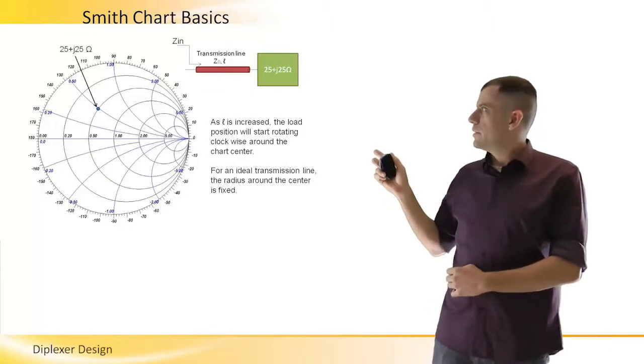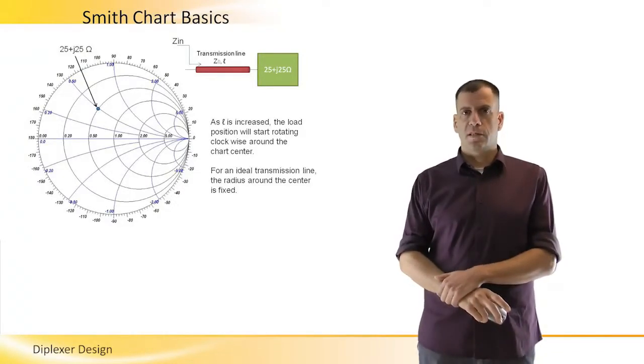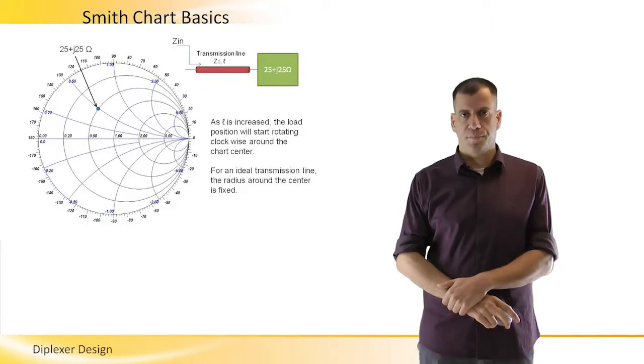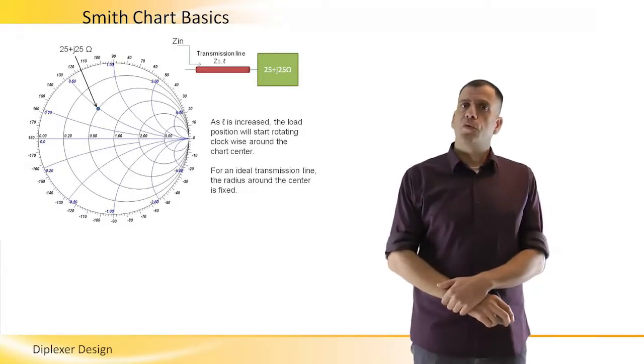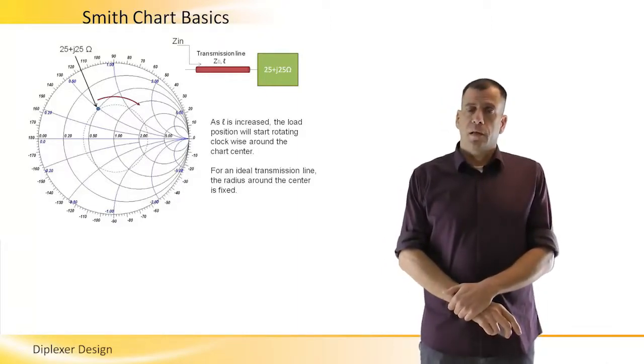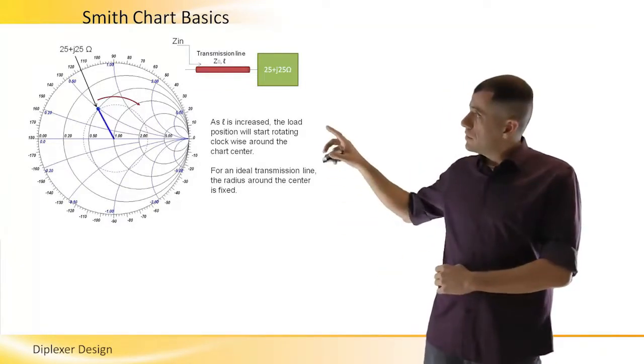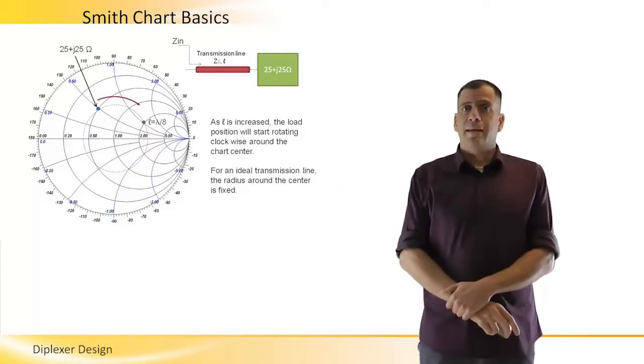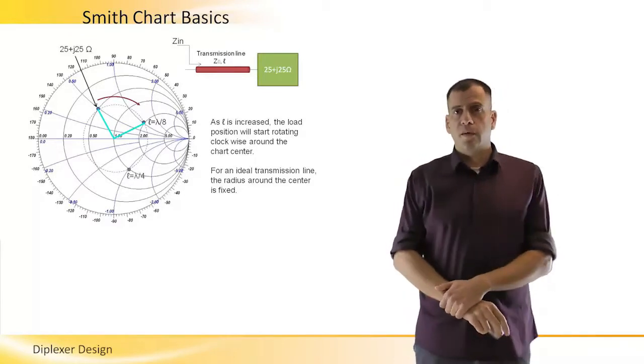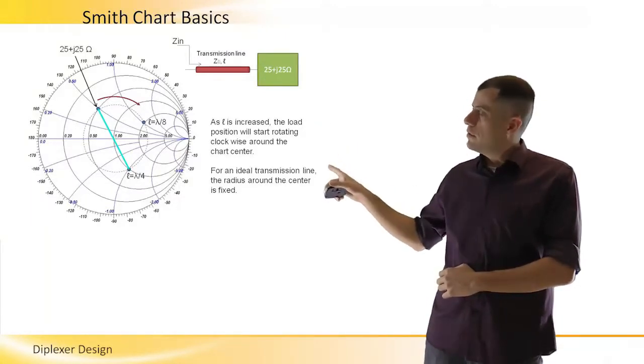Now here we have our 25 plus j25 ohm like before, and I ask what will happen to an impedance view on a Smith chart if we add the ZO transmission line at its terminal and measure our system including the transmission line. The impedance image will start rotating clockwise around the center of the Smith chart, of course assuming we have an ideal lossless transmission line. After an eighth wavelength, the image has rotated 90 degrees as you can see here. After quarter wavelength, the image has rotated 180 degrees and actually jumped to the other side of the center of the Smith chart.